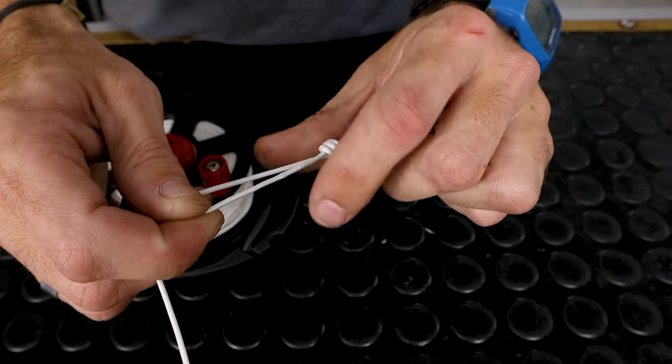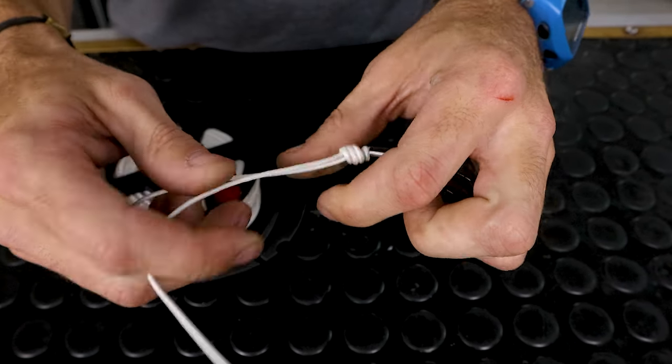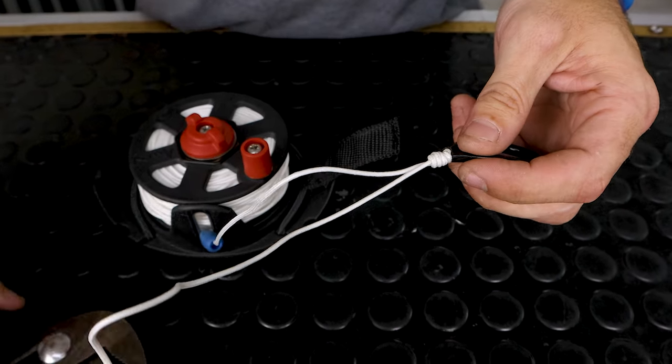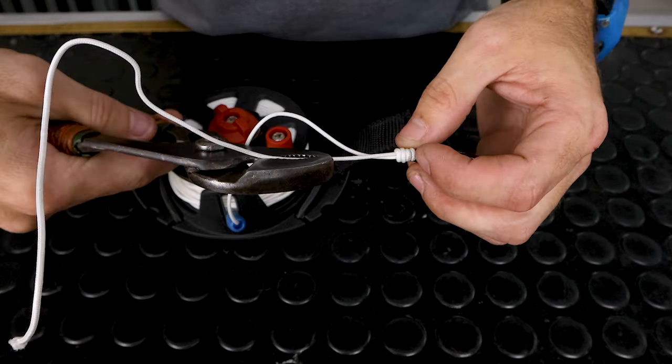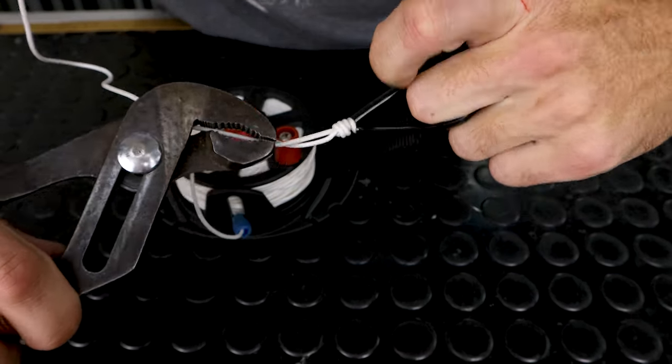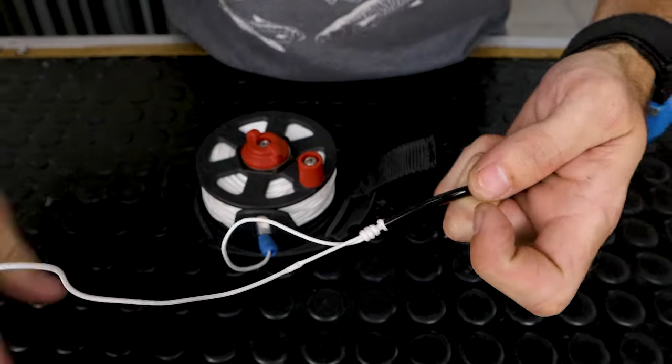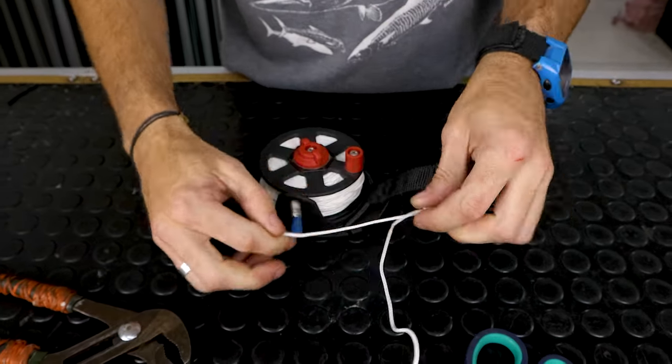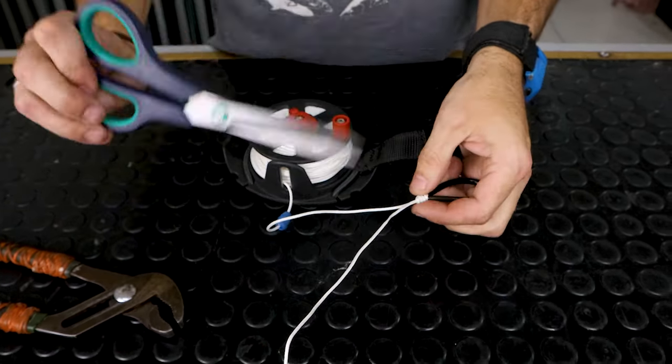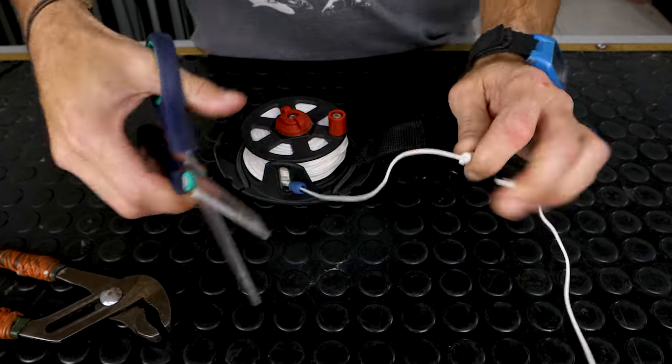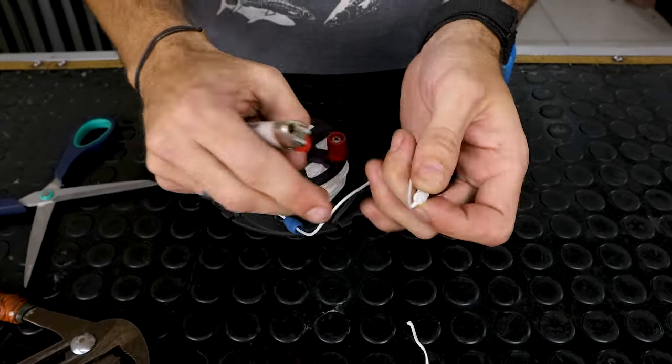To tighten, slowly roll the loops putting tension on the tag end. Keep cinching this up and then use the pliers to tension sufficiently. Once tight, cut and burn the end.